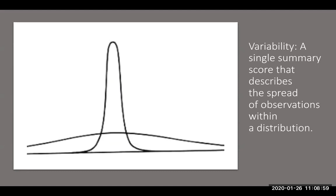So we're going to talk about measures of variability. Variability is defined as a single summary score that describes the spread of observations within a distribution.